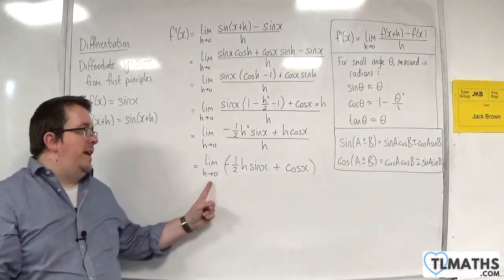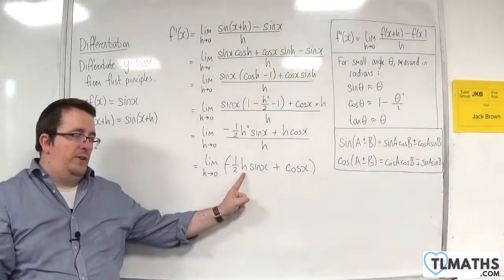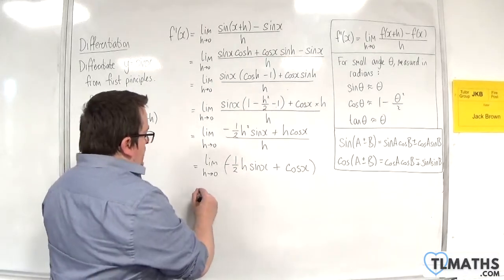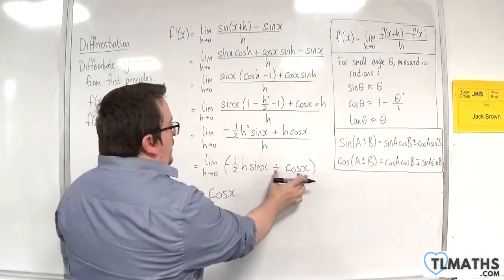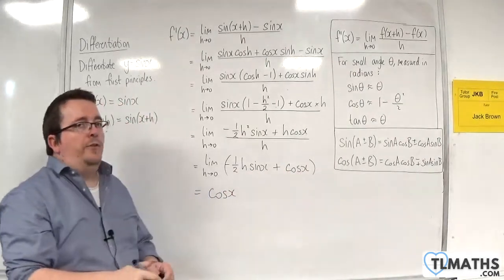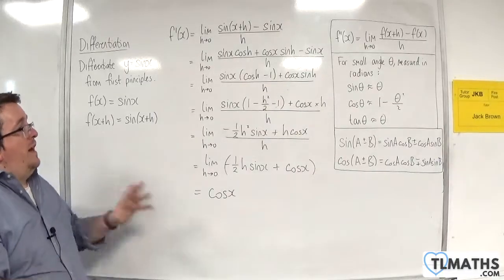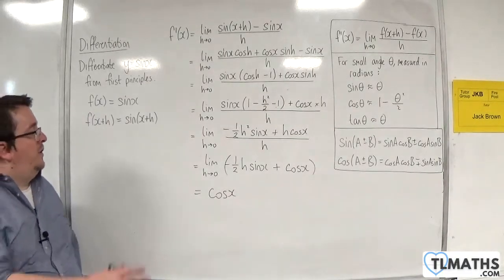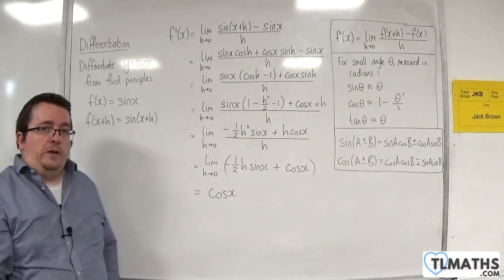Now as h is tending to 0, this multiplier will tend to 0, and so that term will tend to 0, and it'll get closer and closer and closer to being cos x. And so that is how I can show that sin x differentiates to cos x from first principles.